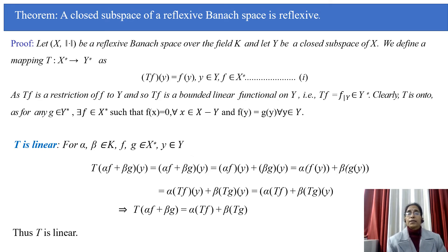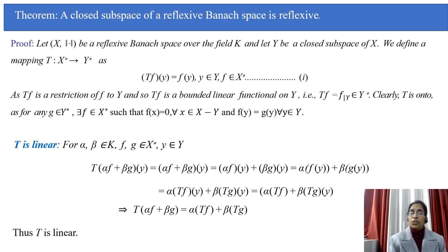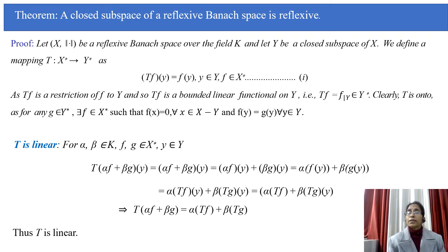Now we show that T is linear. For any alpha, beta in K and f, g in X*, for any y in Y: T(alpha·f + beta·g)(y) = (alpha·f + beta·g)(y) = alpha·f(y) + beta·g(y) = alpha·T(f)(y) + beta·T(g)(y) = (alpha·T(f) + beta·T(g))(y). Since this holds for any y in Y, T(alpha·f + beta·g) = alpha·T(f) + beta·T(g). Thus T is linear.